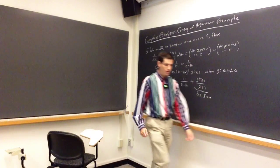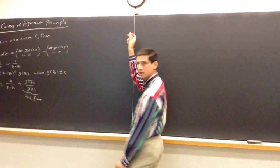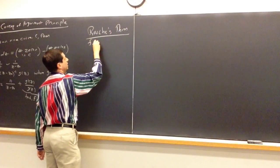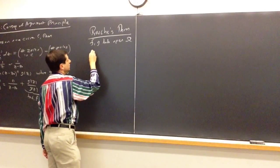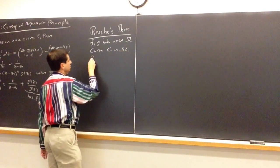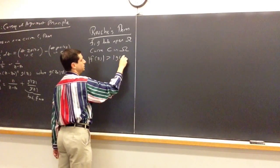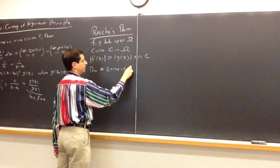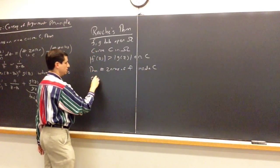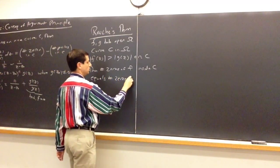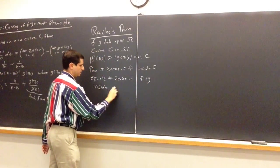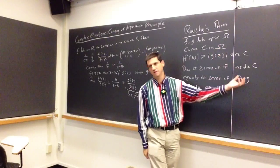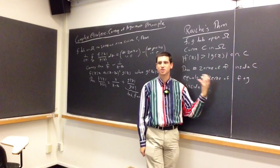So all the analysis comes from essentially noticing the function 1/z lurking in the background. Now, why do we care about this? There are three big theorems today. The first is Rouché's theorem. Given f and g holomorphic in an open omega, with curve C in omega, if |f(z)| > |g(z)| on the curve C, then the number of zeros of f inside C equals the number of zeros of f + g inside C.